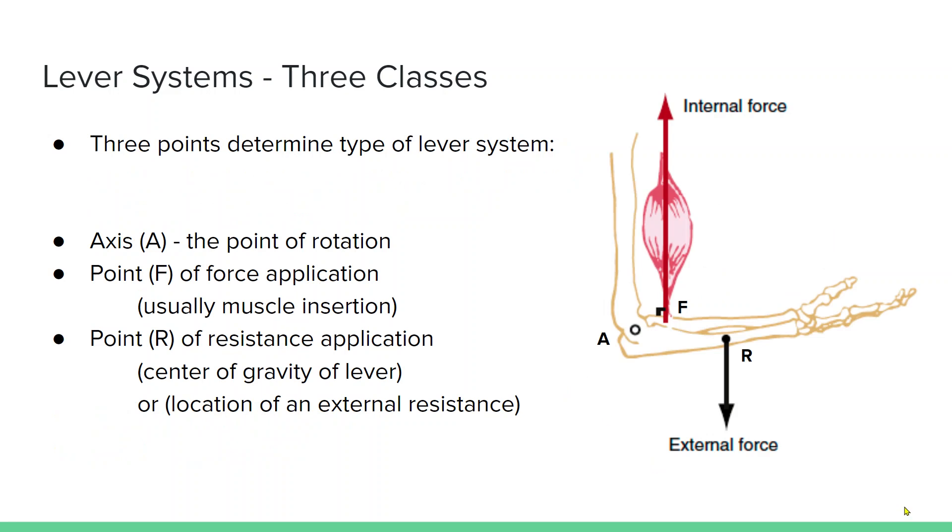We have three classes of levers. There's three things you need to know to determine the type of lever system. You need to identify the axis, the point of rotation. You need to know the point of the force application, which is typically the muscle insertion. So you can see here the biceps brachii. A, the elbow joint is the axis of rotation. F, the point of application of our force, is the insertion of our biceps brachii, and then the point of the resistance application. In this case, it's the weight of our forearm, or if we're holding a dumbbell, that would be the point of resistance application.